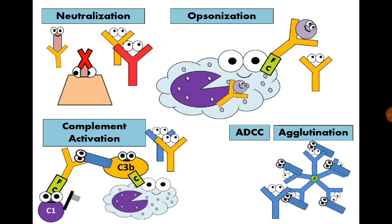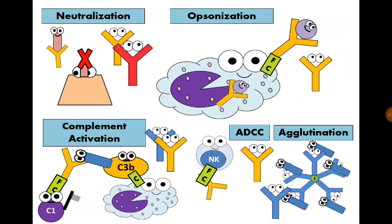Lastly, antibody-dependent cell-mediated cytotoxicity. IgG can do that. It binds to an abnormal cell and becomes attached to Fc receptor on natural killer cell facilitating cell killing.